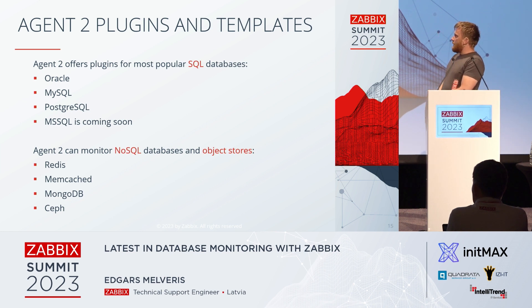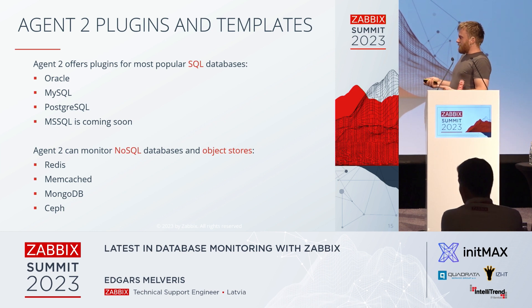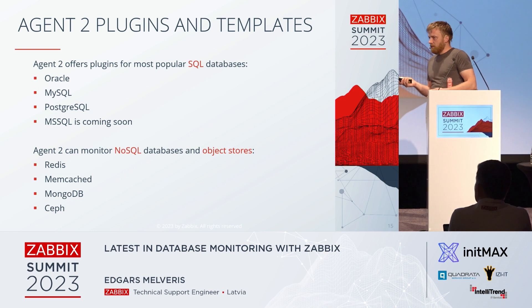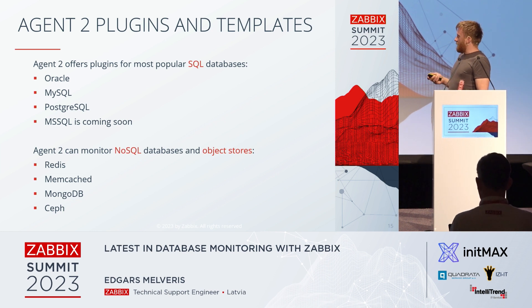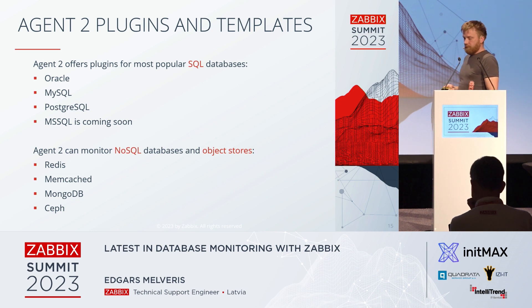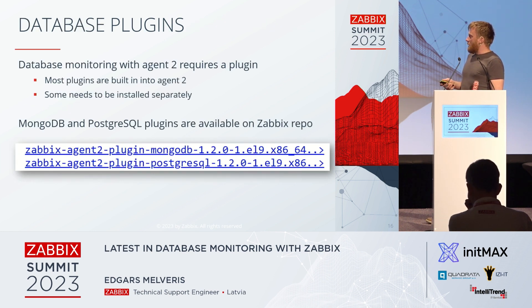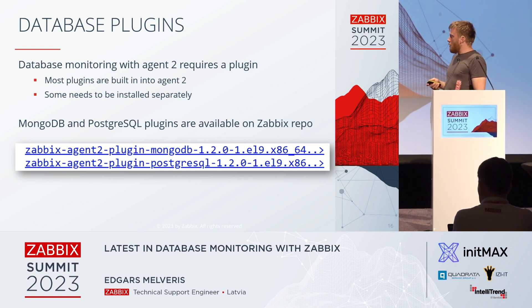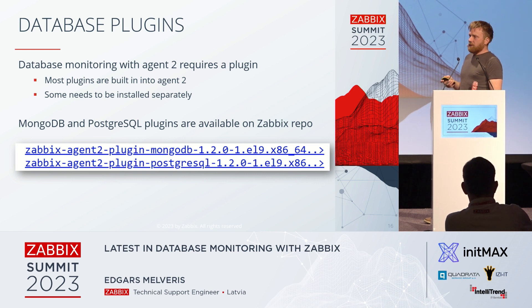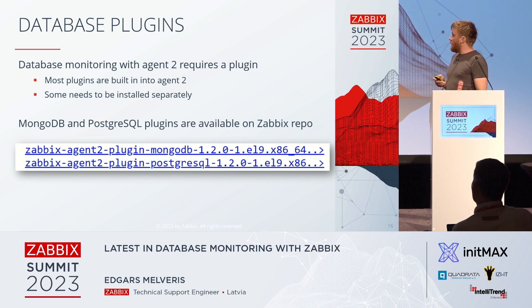For Agent 2 plugin integrations: for classical relational SQL databases, Oracle, MySQL, and PostgreSQL are already covered. Microsoft SQL is coming soon — the plugin and template are supposed to be released soon. There are also other types — not just those databases. Other plugins for Agent 2 exist as well. Most of those plugins come preinstalled with Agent 2, but a couple come in separate packages. They used to be dependencies of Agent 2, but now they are not. As demonstrated in the morning, you install an additional package to monitor MongoDB or PostgreSQL, and they are available from our repository.